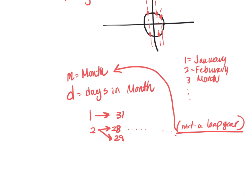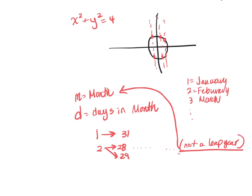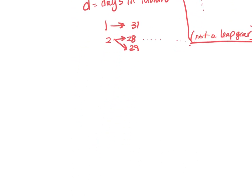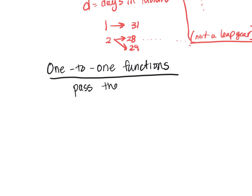We can have tables, we can have graphs as functions. We pass a vertical line test. We have a subset of functions called one-to-one functions. These functions pass the vertical line test because they're functions, but they also pass the horizontal line test.